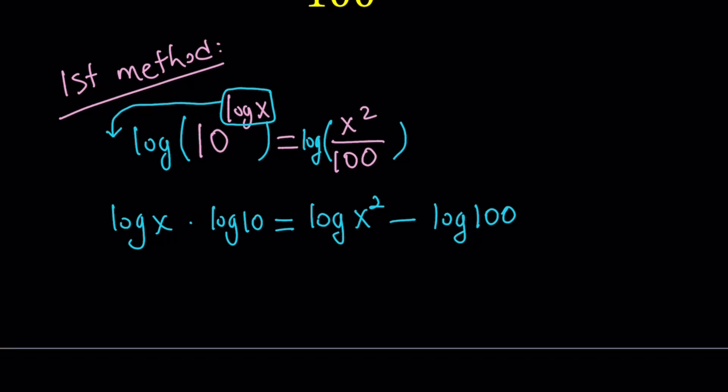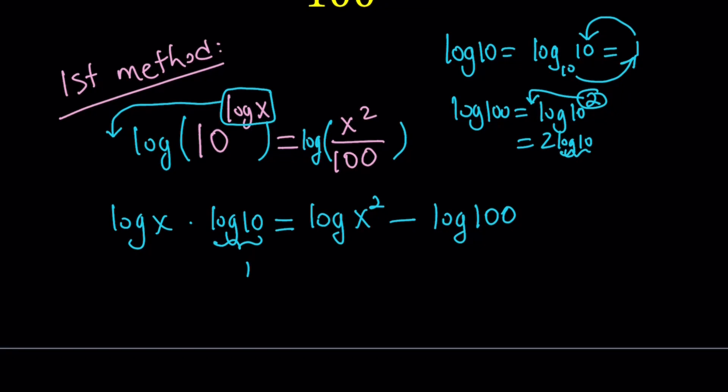So a couple things we can do here to simplify log 10, first of all, it's base 10, so we can think of log 10 as log 10 with base 10, which is equal to 1 by using properties of logs or the definition. Think about it. 10 to the power of 1 equals 10, right? That's how we check logs. So that's 1, and log 100 is log 10 squared, and now 2 can be moved like before, and this becomes 2 times log 10, and log 10 is 1, so this is 2.